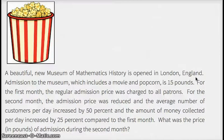A beautiful new Museum of Mathematics History is opened in London, England. Admission to the museum, which includes a movie and popcorn, is 15 pounds. For the first month, the regular admission price was charged to all patrons. For the second month, the admission price was reduced and the average number of customers per day increased by 50%. And the amount of money collected per day increased by 25% compared to the first month. What was the price in pounds of admission during the second month?